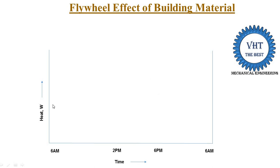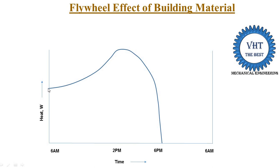When we draw the heat absorbing graph from 6 a.m. to 6 p.m., after 6 p.m. the sunset is done, so there is no solar radiation coming to the building material. We draw two lines — one curve for solar radiation absorption by the wall, and one for solar radiation released by the wall. From 6 a.m., the wall has some initial heat, then as solar radiation comes in, the wall absorbs more and more heat, reaching maximum absorption at 2 p.m.